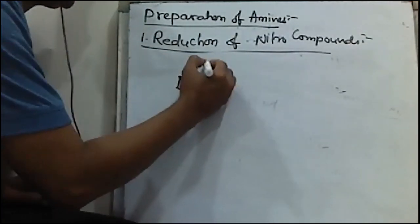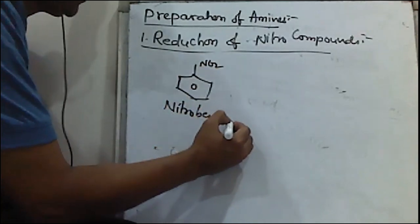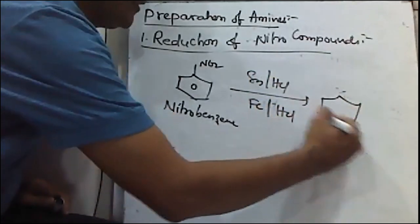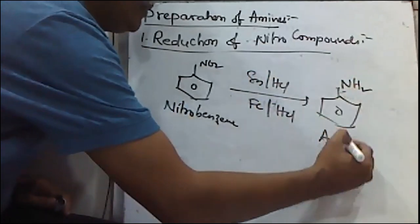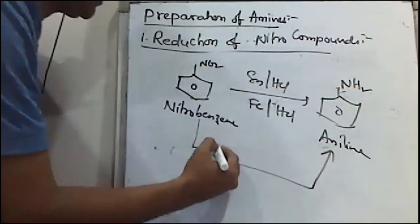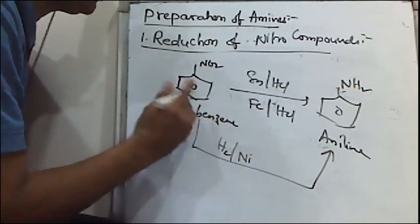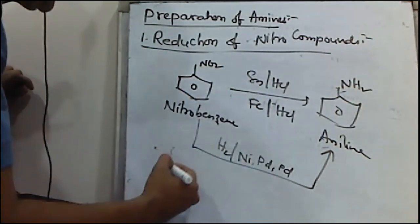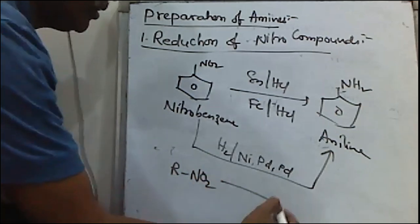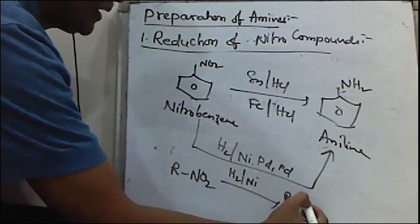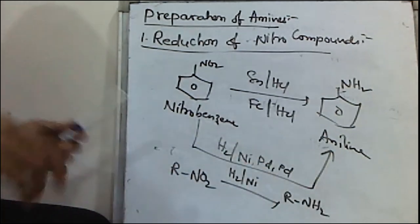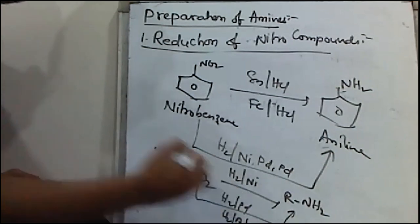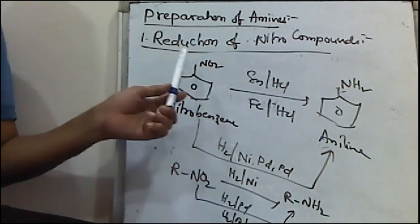For example, this compound is called nitrobenzene. When treated with tin/HCl or iron/HCl, aniline (a primary amine) is formed. Similarly, the same conversion can be carried out when nitrobenzene is treated with hydrogen gas in the presence of nickel, palladium, or platinum. Nitroalkanes can also be treated with H2/Ni or H2/Pd or H2/Pt to get the corresponding amines. This is about reduction of nitro compounds.